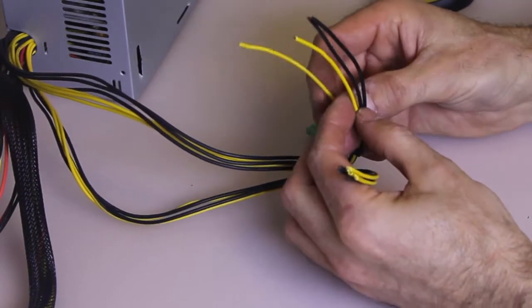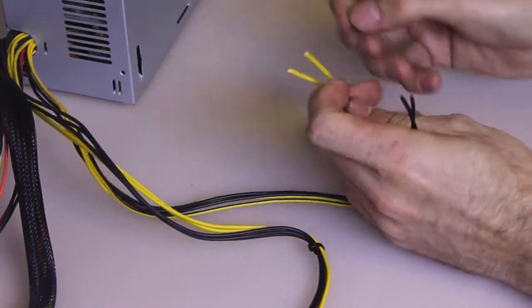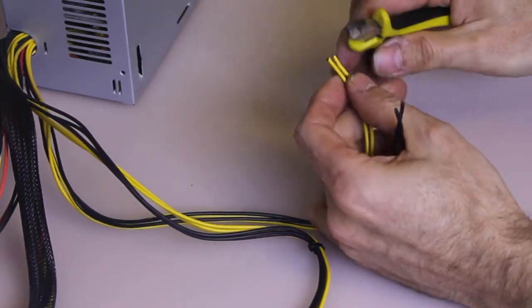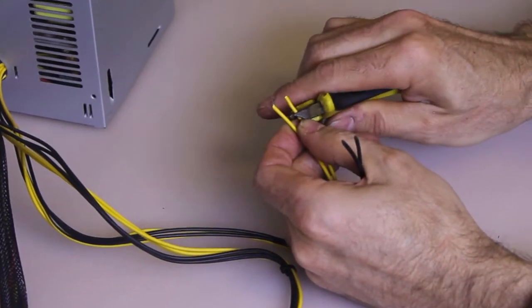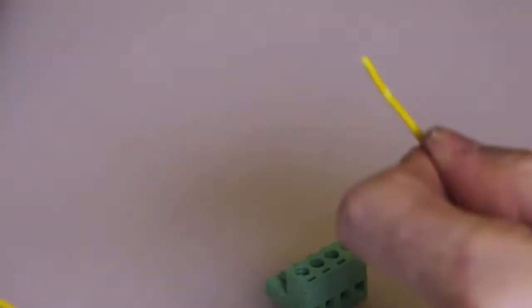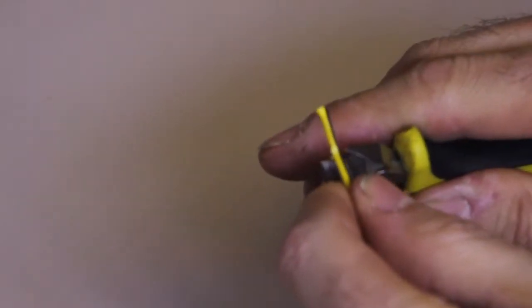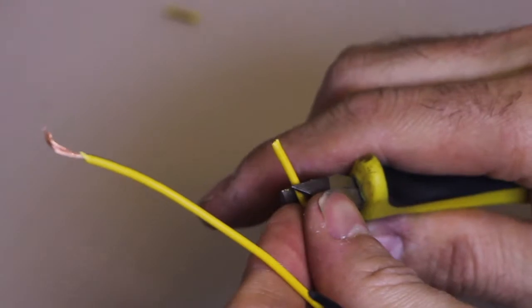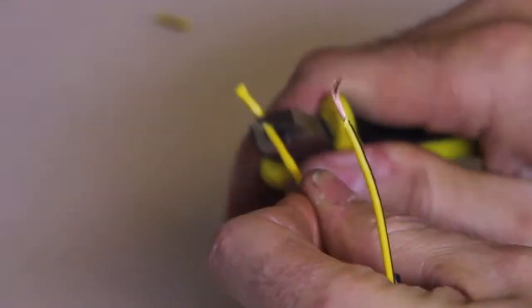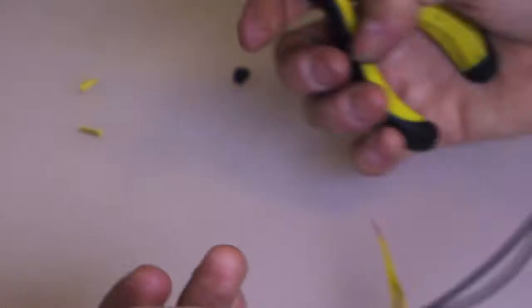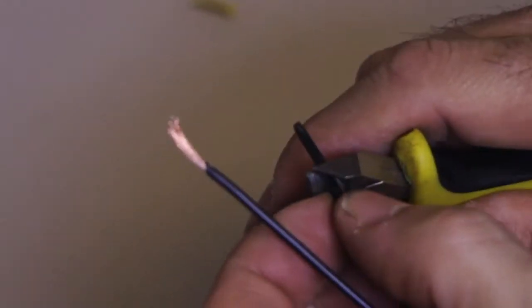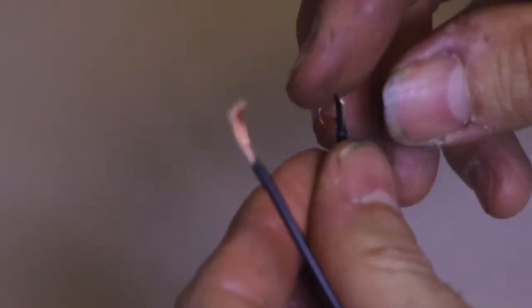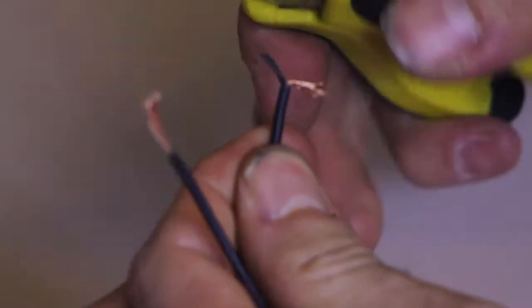So just separate out your wires. I'm going to grab 2 yellow and 2 black. Just strip back about 10mm. What we're going to do is put 2 of these together. Let's twist them together, do the same for the black. Cut that tail off and strip cleanly.